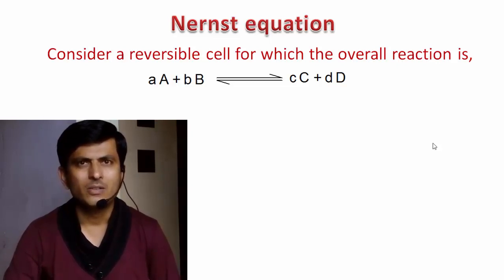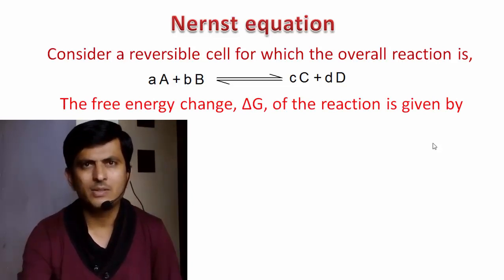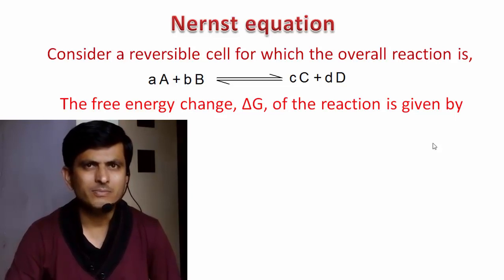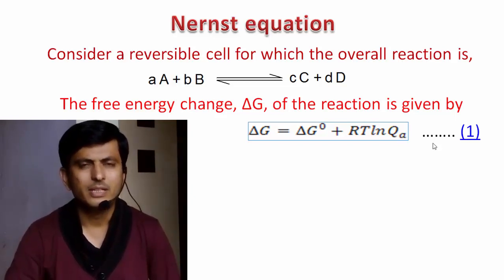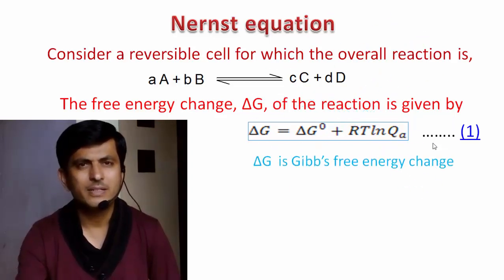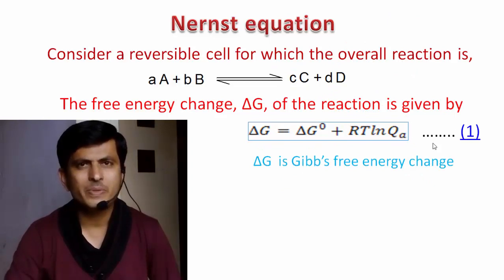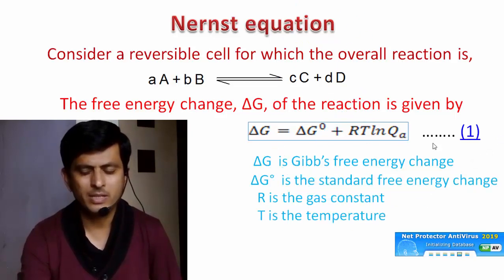For this reversible reaction, the free energy change — that is, the Gibbs free energy change ΔG — is given by the equation: ΔG = ΔG⁰ + RT ln QA. This is Equation 1. Here, ΔG represents the Gibbs free energy change, ΔG⁰ represents the standard free energy change, R is the gas constant, and T is the temperature.